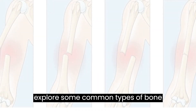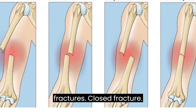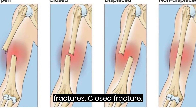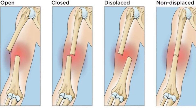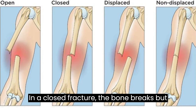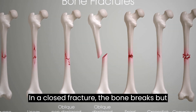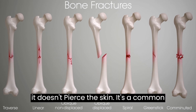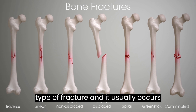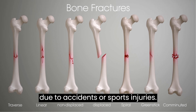Let's explore some common types of bone fractures. First, the closed fracture, also known as a simple fracture. In a closed fracture, the bone breaks but doesn't pierce the skin. It's a common type of fracture, and it usually occurs due to accidents or sports injuries.